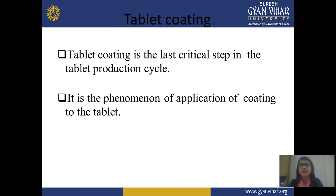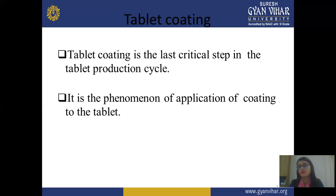Before starting this topic, first you should know about tablet coating — what is tablet coating, or the definition of tablet coating. Tablet coating is the last critical step in the tablet production cycle. First you form granules or use direct compression with the help of dies and punches, tablets get formed, and after this tablet formation, you may use this coating procedure. But this coating procedure is not for all types of tablets — it depends on requirement. For specific types, suppose a tablet is required to show effect at a particular site, you use coating with a specific polymer for intestinal-type tablets.